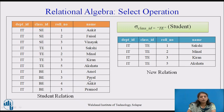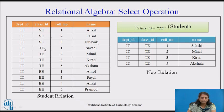Consider this student relation with four attributes: department ID, class ID, roll number, and name. The first example: select where class ID equals T from the relation student. Going through the relation, there are four records or tuples having class ID equal to T. So the new relation we obtain has four tuples from this particular algebra expression.